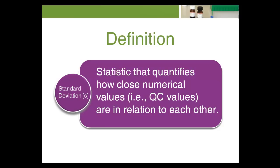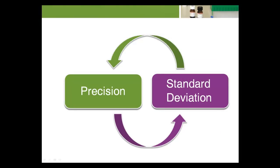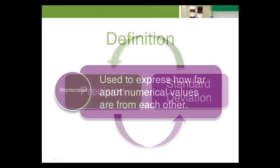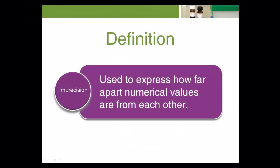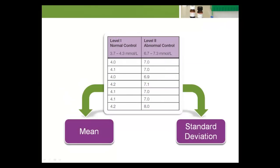Now that you understand mean, we can move on to standard deviation. Standard deviation is a statistic that quantifies how close numerical values — i.e., QC values — are in relation to each other. The term precision is often used interchangeably with standard deviation. Another term, imprecision, is used to express how far apart numerical values are from each other.